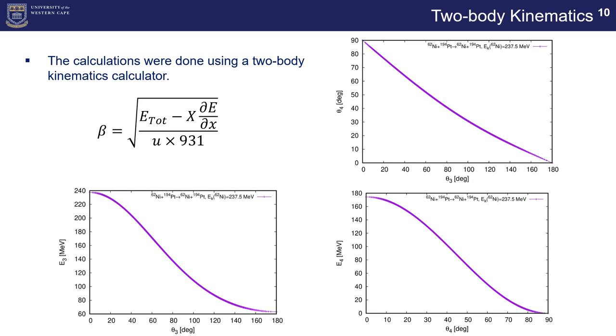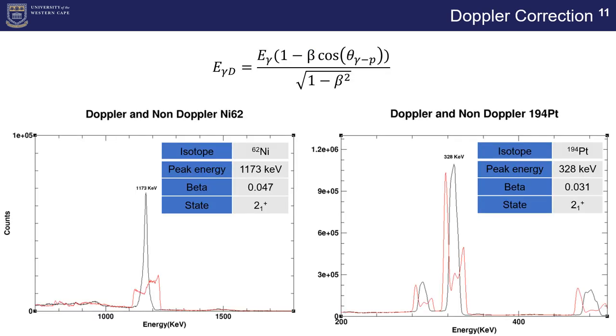We can also relate the scattering angle for the nickel 62 to the platinum, which is a one-to-one correspondence, and then find out what is the energy of the platinum scattering in relation to the nickel 62 scattering. Then following that, we can then use that to calculate the energy of the platinum in order to Doppler correct it. That is what we did. Once we had used the Doppler correction equation, we were able to then Doppler correct both peaks in nickel 62 and in platinum 194, and that is the first 2 plus state for both platinum and nickel, platinum being 328 keV and the nickel 1173 keV respectively. They use beta values of 0.047 and 0.031.